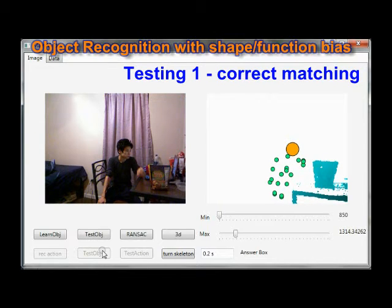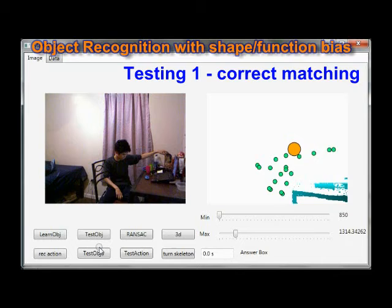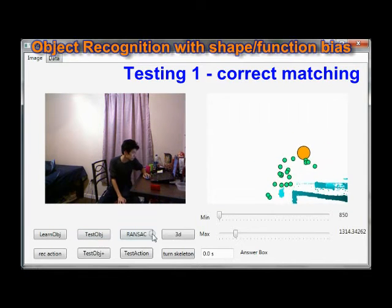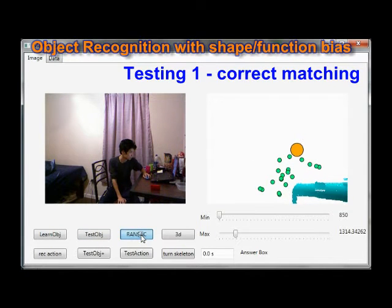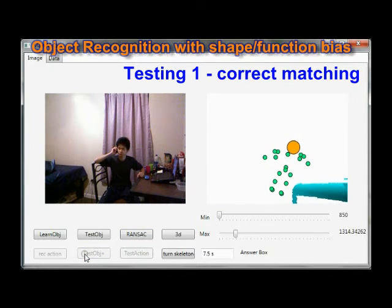I think the object is snack for eating. I think the object is cell phone for talking.